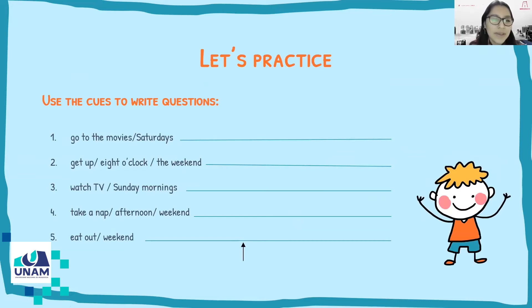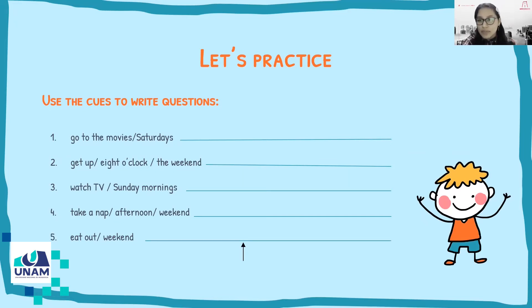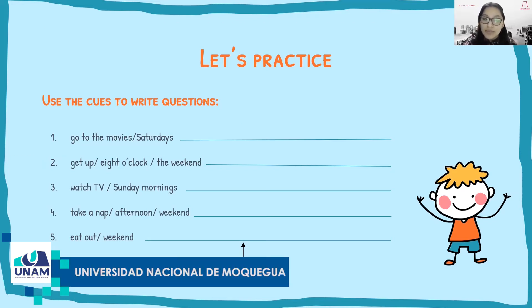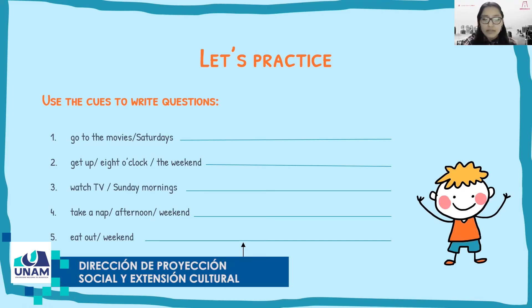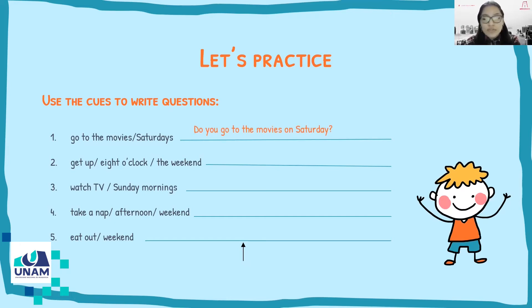Today we're going to talk about free time. We are going to use the cues to write questions. For example, in number one we have 'go to the movies on Saturday.' To write a question, it's important to know the grammar: first we use the auxiliary 'do' or 'does,' plus the subject, plus verb, plus complement. So we can say: 'Do you go to the movies on Saturday?' We use 'do' because the subject is 'you.'